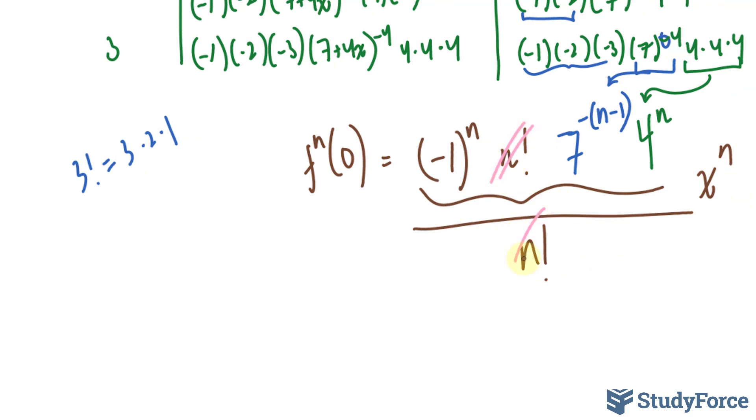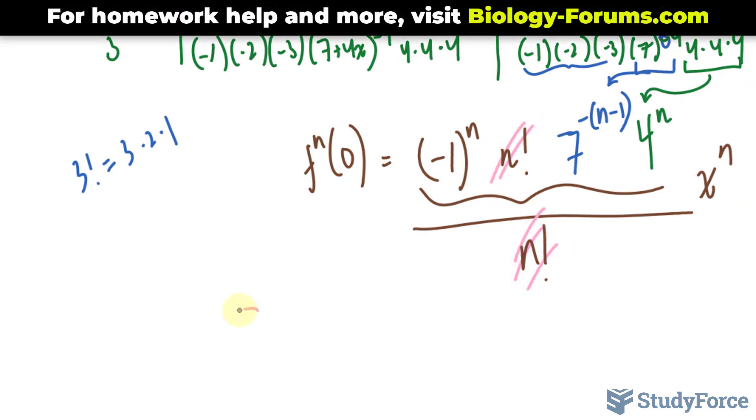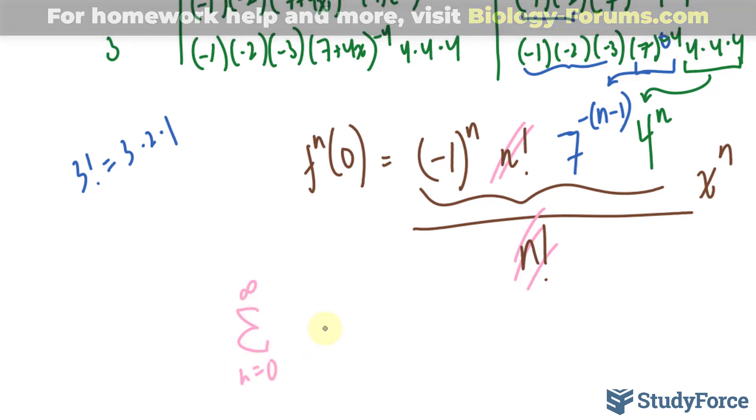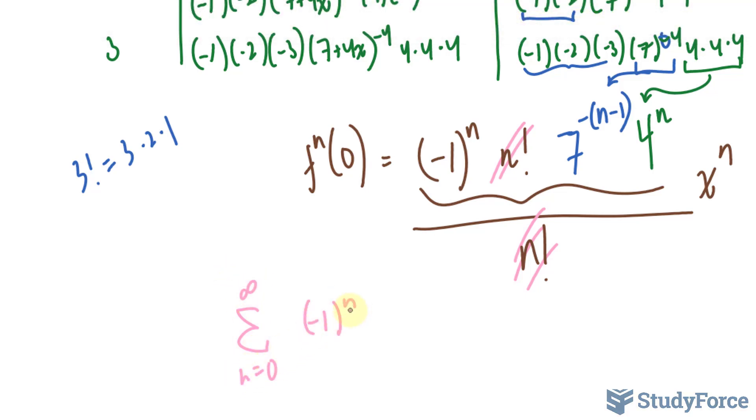n factorial will cancel out, giving us our general formula. The sum is negative 1 to the power of n, 7 raised to the power of negative n minus 1 in brackets, 4 to the power of n times x to the power of n.